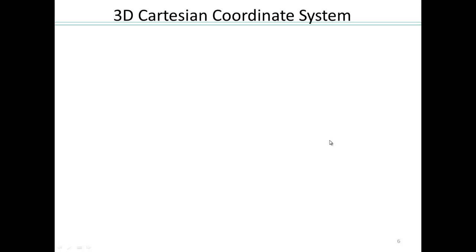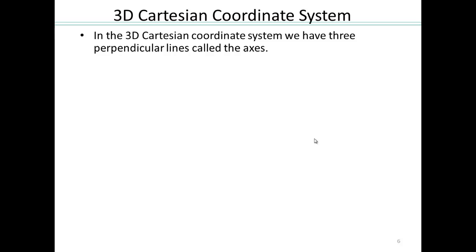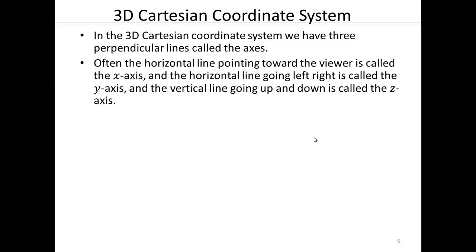So an extension of the two-dimensional space would be to three-dimensional Cartesian coordinate system. What do you think that involves? Remember, we started with the real number line. Then in two-dimensional, we have two number lines perpendicular to each other. So now we're going to have to have three perpendicular lines called the axes.